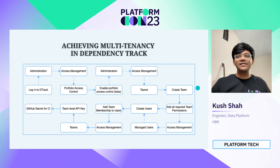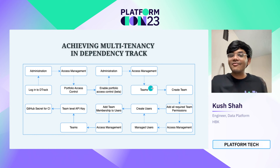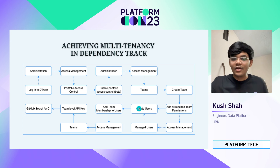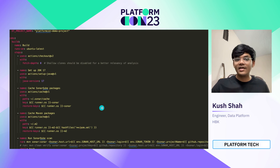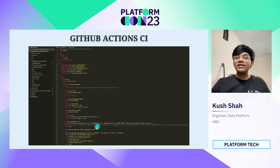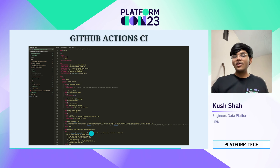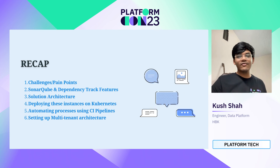Achieving multi-tenancy in Dependency Track is similar to SonarQube. We log into Dependency Track as admin, go to Portfolio Access Control, and enable it — which is currently in beta. This is what ensures multi-tenancy in Dependency Track. Once that's done, we create teams, add required permissions to those teams, and add users to those teams. A team-level API key is then generated and passed as a GitHub secret for the CI. As shown in the GitHub CI code, we pass the Dependency Track API key at the team level, so only the SBOM generated and pushed to Dependency Track via that action will be accessible to users within that particular team.